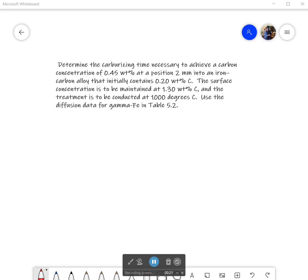So, what's the question to ask? Well, it says determine the carburizing time necessary to achieve a carbon concentration of 0.45 weight percent at a position 2 mm into an iron-carbon alloy. It initially contains 0.2 weight percent carbon. The surface concentration is to be maintained at 1.3 weight percent carbon. And the treatment is to be conducted at 1000 degrees Celsius. It says use the diffusion data for gamma iron in table 5.2, just so you know that's going to be looking like this.